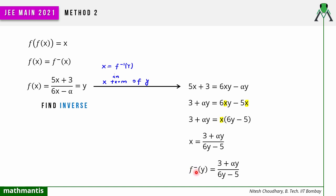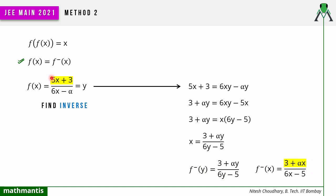Now we can solve the question easily. We need f(x) = f⁻¹(x). We know f⁻¹(x) = (3 + αx) / (6x − 5). Comparing this with f(x) = (5x + 3) / (6x − α): the numerators give 5x + 3 vs αx + 3, so α = 5. Comparing the denominators, 6x − α vs 6x − 5, also gives α = 5. This is the easy second method — just find the inverse and compare.